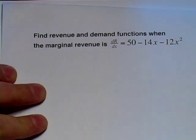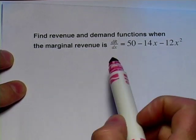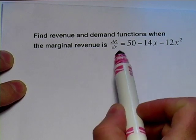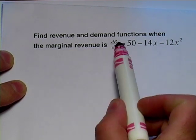This next problem is pretty similar to the last one, except the names of the functions are a little bit different. We're given a marginal revenue function, and then we're asked to find the revenue and the demand functions.